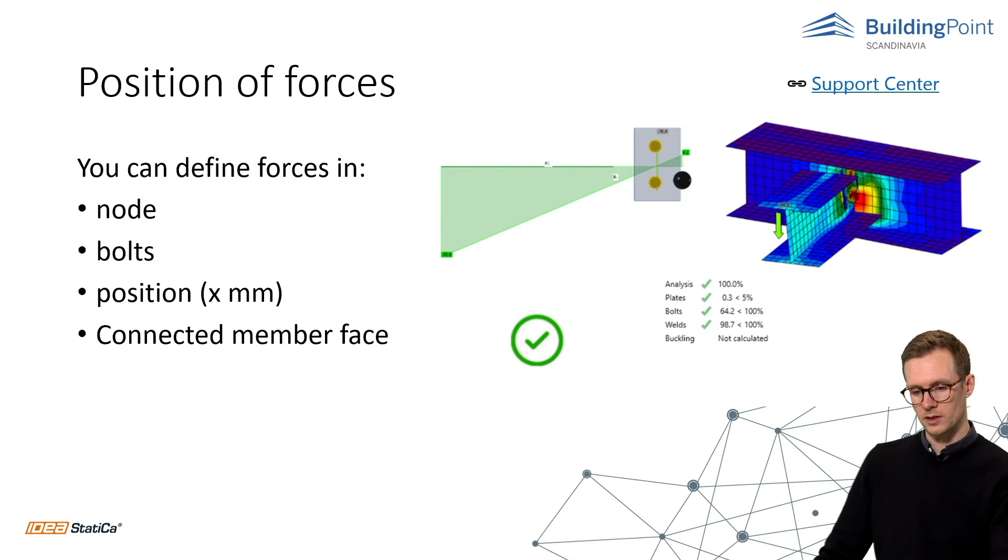And the last topic is position of forces. So when modeling hinged connections, it is necessary to change the position of the acting load, the shear force, into the place where the hinge is assumed to be. This position will also be the point with the zero bending moment.